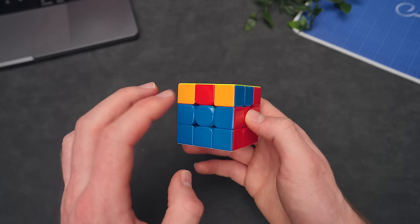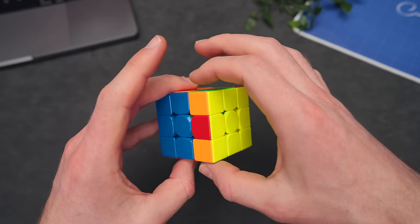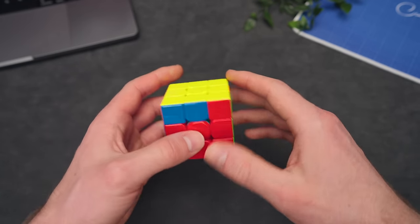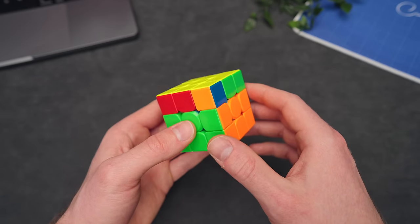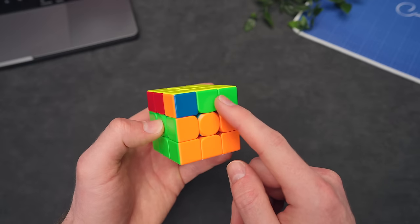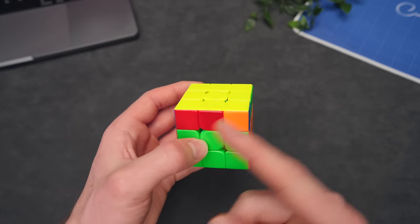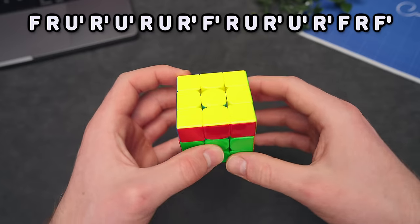And then onto a T perm, if you have headlights right here and you have a bar here as well as here, so two bars opposite of each other. If we have this case and we do a T perm, we would solve PLL in one step. And then finally, if you do not have any headlights, but you have a bar here and here, hold one bar in the front and one to the right. And if we then do a Y perm, we did PLL in one step.